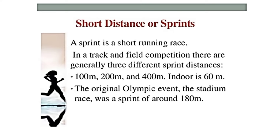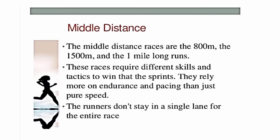A sprint is a short running race in a track and field competition. There are generally three different sprint distances: 100 meters, 200 meters, and 400 meters. Indoors, the sprint distance is 60 meters. The original Olympic event, the stadium race, was a sprint of around 180 meters.